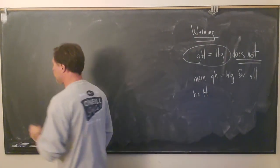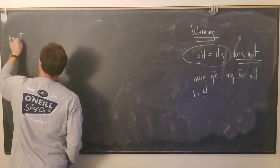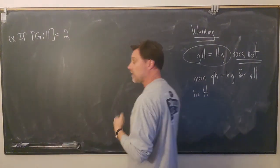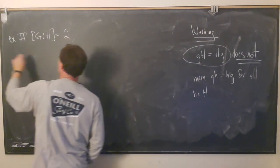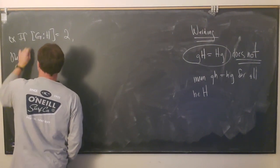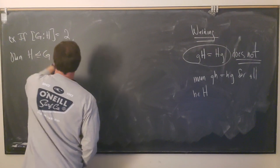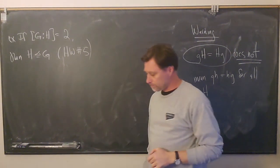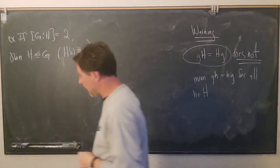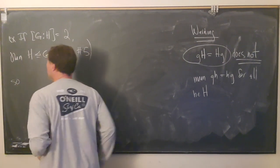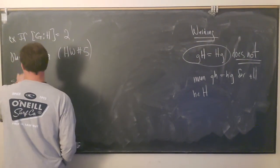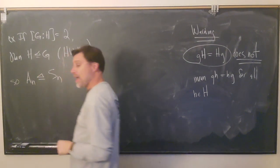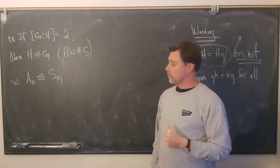Here was a homework problem: if the index of H in G is equal to 2, then H is normal in G. That was in homework number 5. For example, we know that A_n has index 2, and so that tells us that A_n, the alternating group, is always a normal subgroup of S_n.